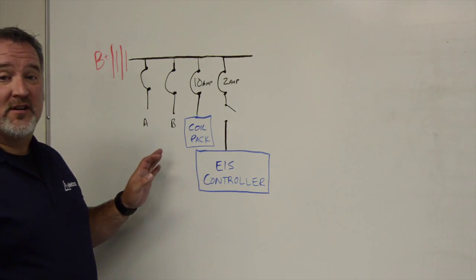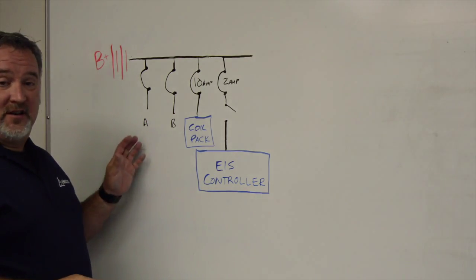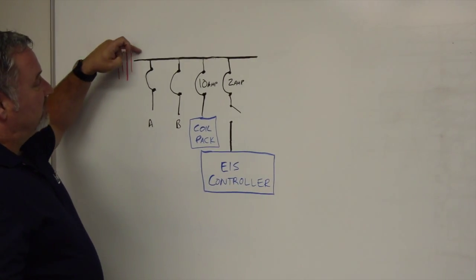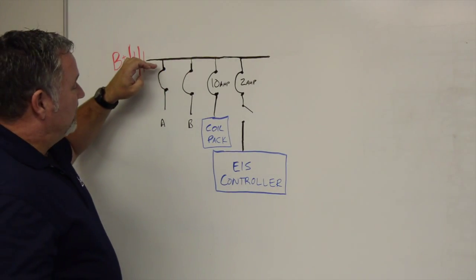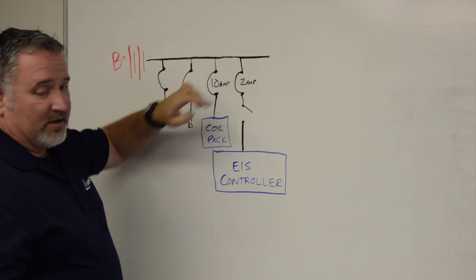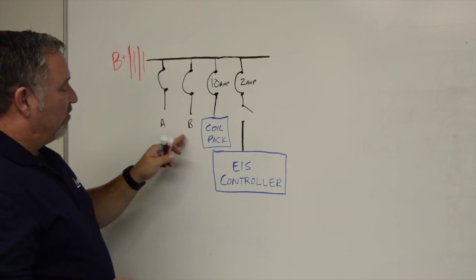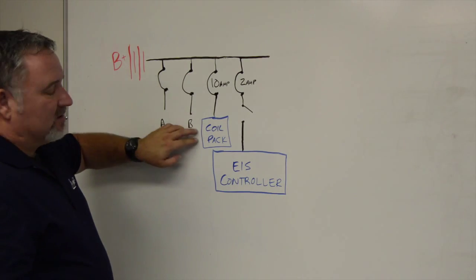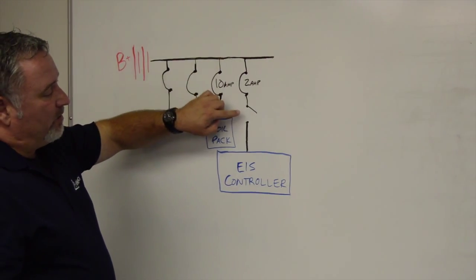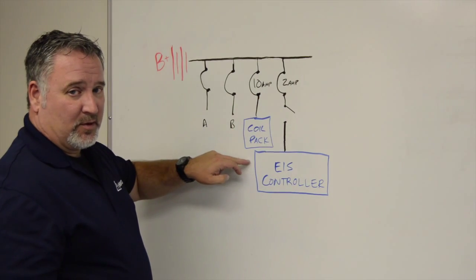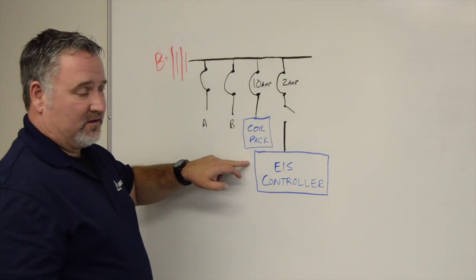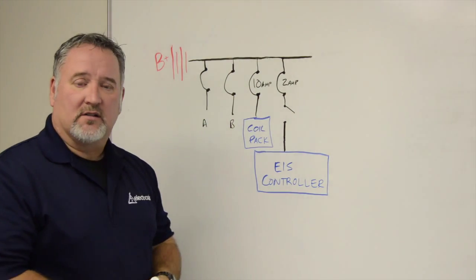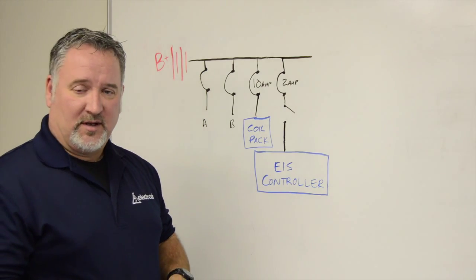Behind me here I've drawn a simple circuit of an aircraft main bus. B plus supplying the main bus and then legs coming off of the main bus supplying different components. Components A and B are just random components. A 10-amp circuit here supplying our coil pack. A 2-amp switched circuit supplying the electronic ignition controller. That's the proper way to wire the Electroair system into the main bus.